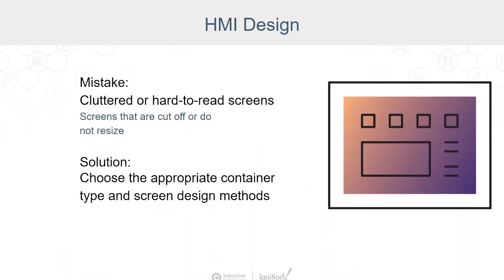Sometimes the underlying cause of a cluttered screen is an incorrect container type. It's really tempting for new Vision users to use the coordinate container because it's the most familiar, but it's not always the best container for your use case, and other container types should be considered. We're going to take a look at some examples for each Perspective container type, and some other HMI design pitfalls.